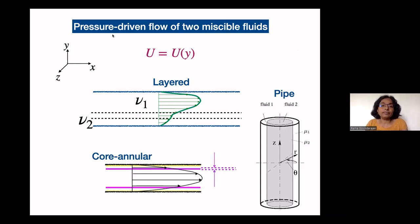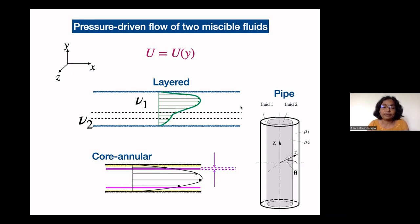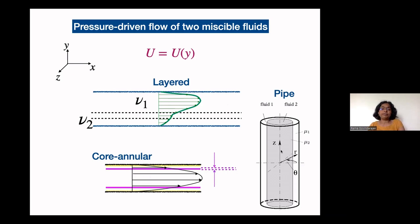We're talking about pressure driven flow of two miscible fluids. The two fluids have viscosity different from each other but the same density. This is fluid 1 and fluid 2 going through a channel — it could be in core annular form with one fluid in the center and one on the sides, or in a layered structure. Pipe flows are another example which we will not be talking about today.